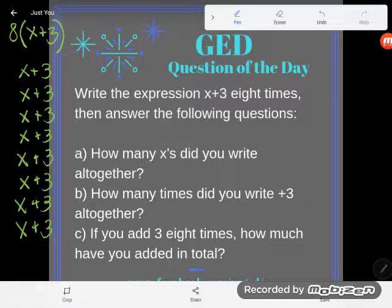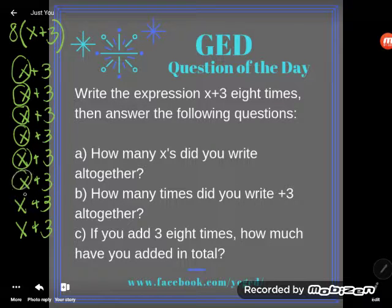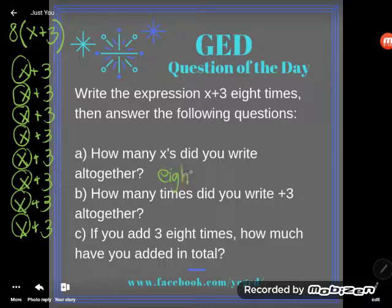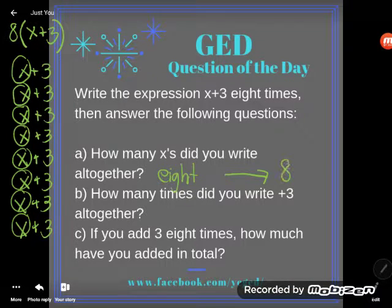Now let's answer the questions. A. How many x's did you write altogether? Does it feel like a bit of a dumb question? Well, let's take a look. One, two, three, four, five, six, seven, eight. Eight of them, of course. If I wrote x plus 3 eight times, I end up with 8 x's. So how many x's did I write? I wrote 8. If I were just going to say that in the language of algebra, instead of writing it out in English, I would say I found 8x.